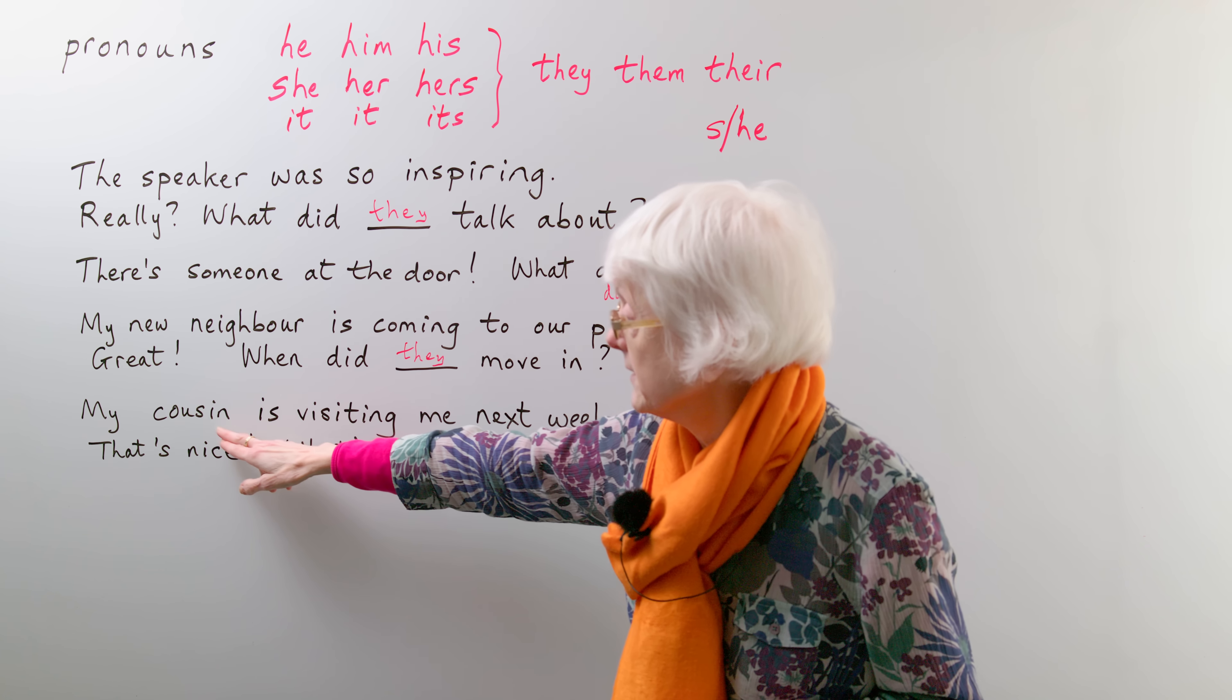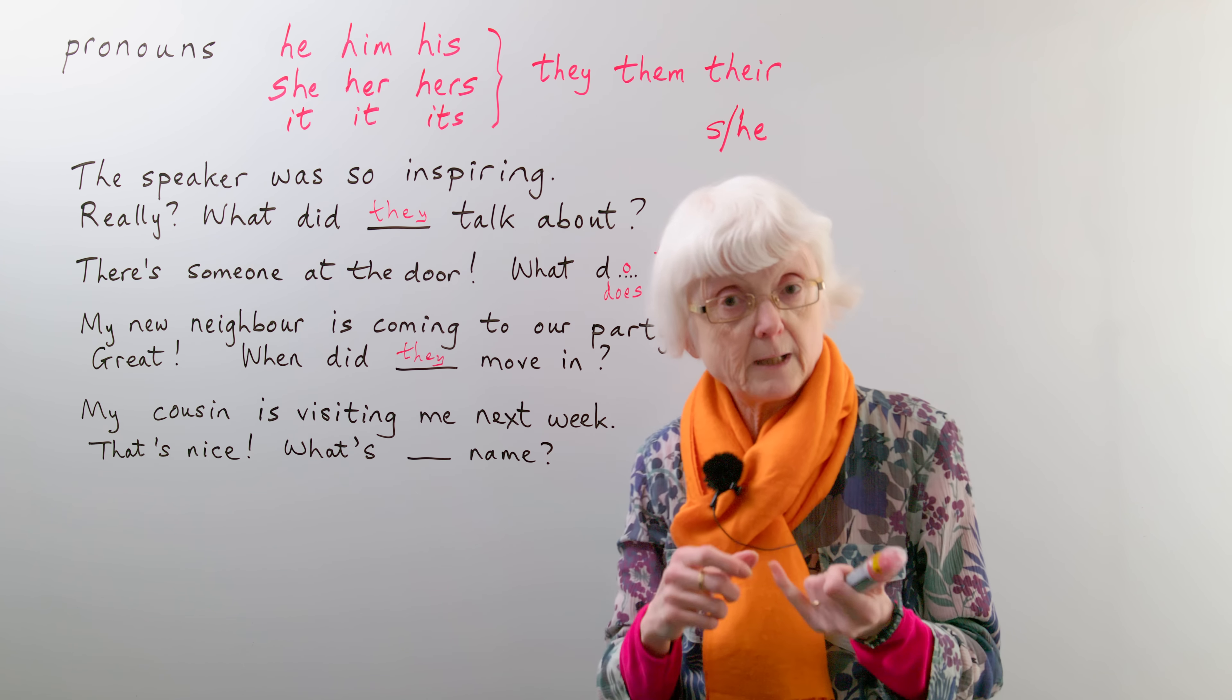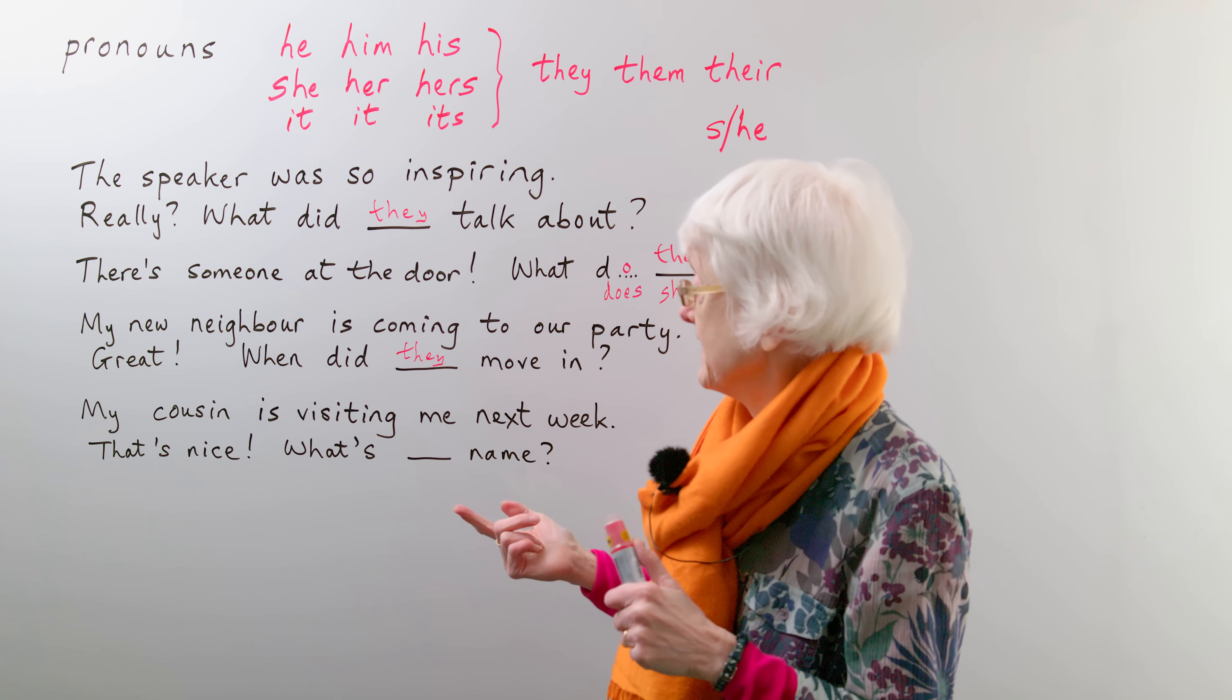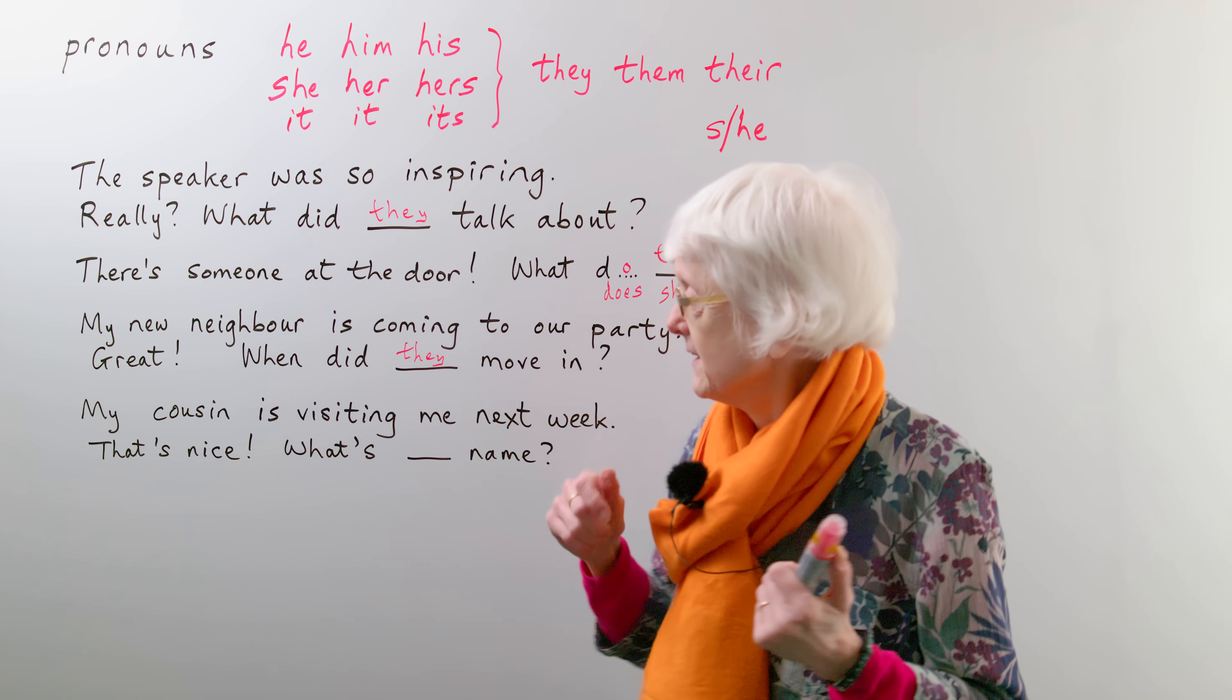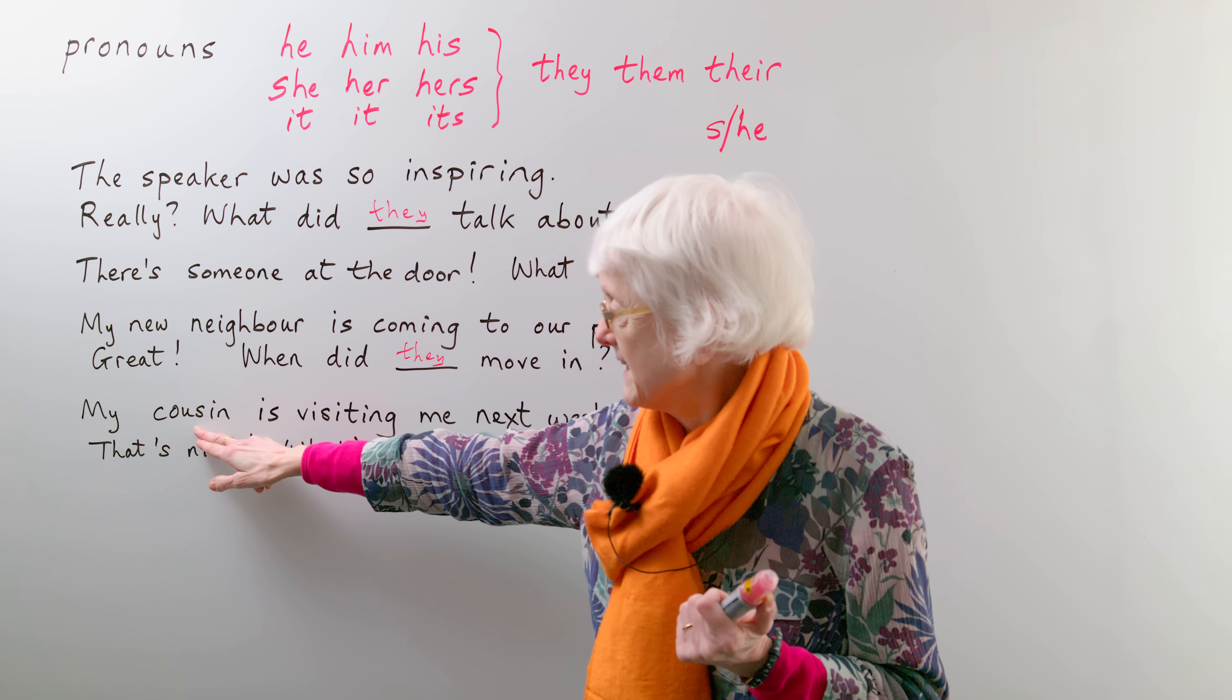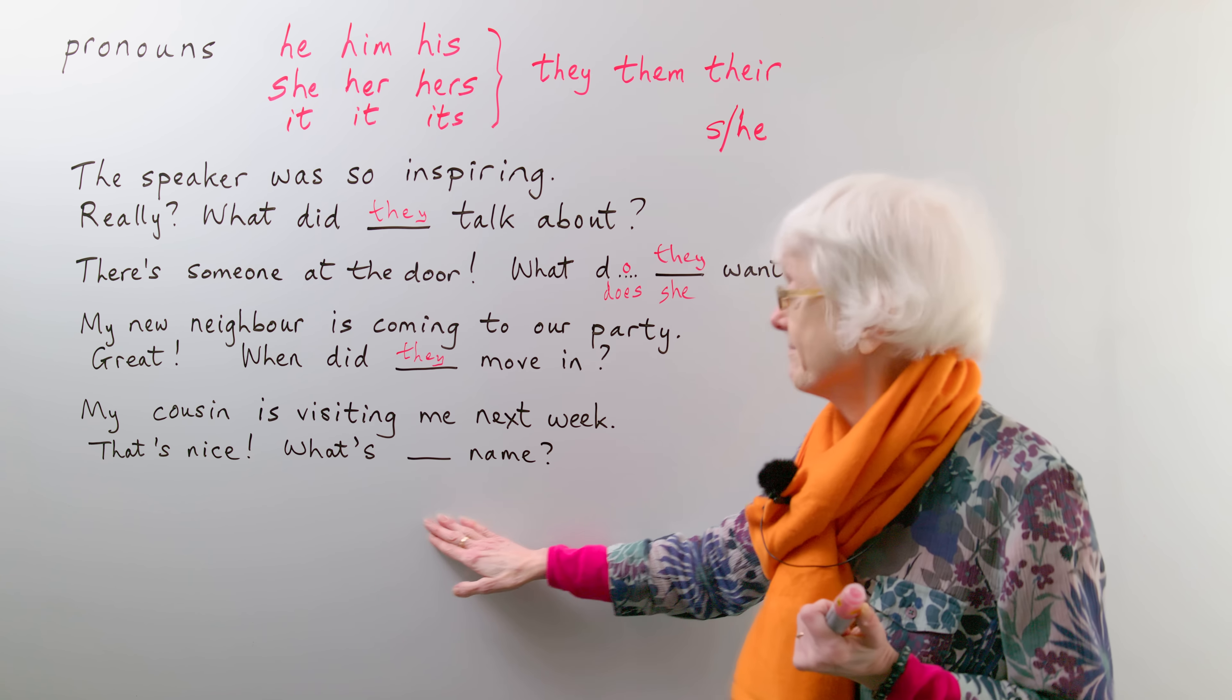And then finally, another. My cousin is visiting me next week. I've deliberately chosen cousin because a cousin can be male or female. If I'd said my niece or my nephew, you immediately get the gender. So a sister, brother, I thought, no, I can't use that one. What sort of family member has the same word for both genders? Ah, cousin. Right. My cousin is visiting me next week. That's nice. What's... name.